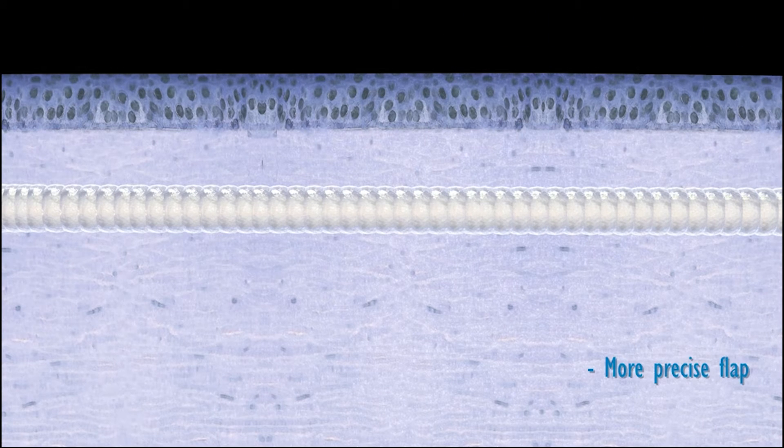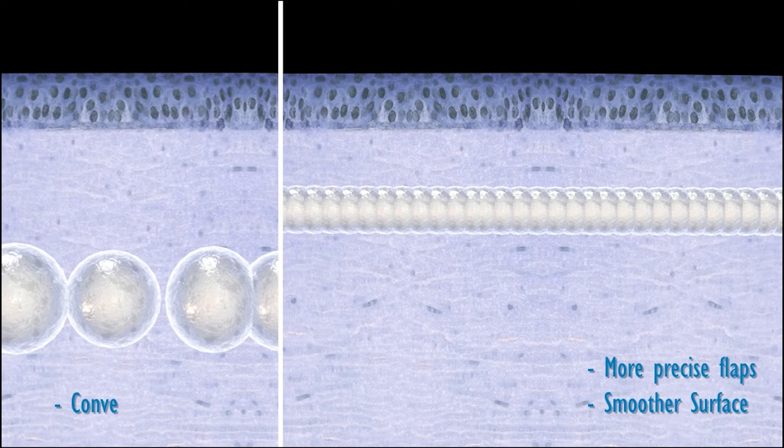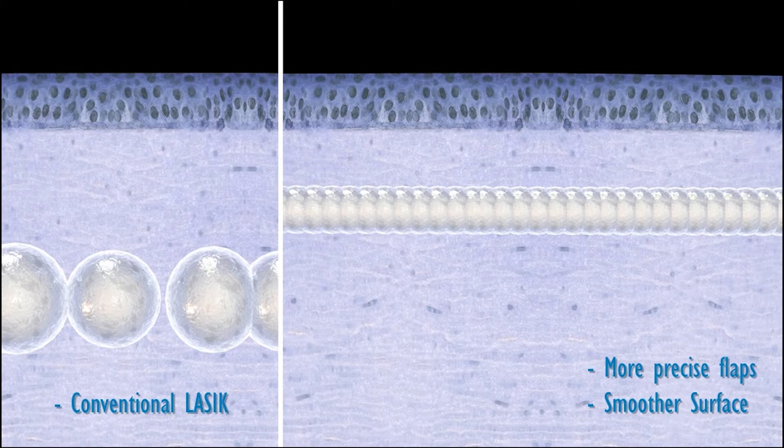With Z LASIK, these pulses are significantly smaller than in other LASIK methods with a high degree of overlapping. This ensures more precise flaps and a smoother surface.